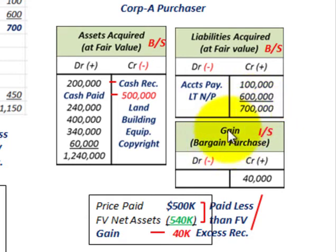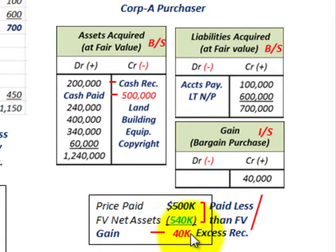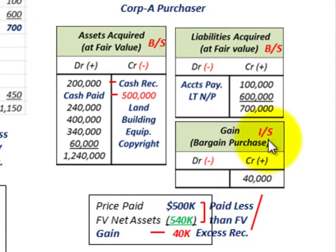This is where the gain comes into recording on the income statement for the bargain purchase. They would have credited that for $40,000. The price paid was $500,000, but the fair value of the net assets received was $540,000, so the excess amount of $40,000 gets recorded as a gain on the income statement.